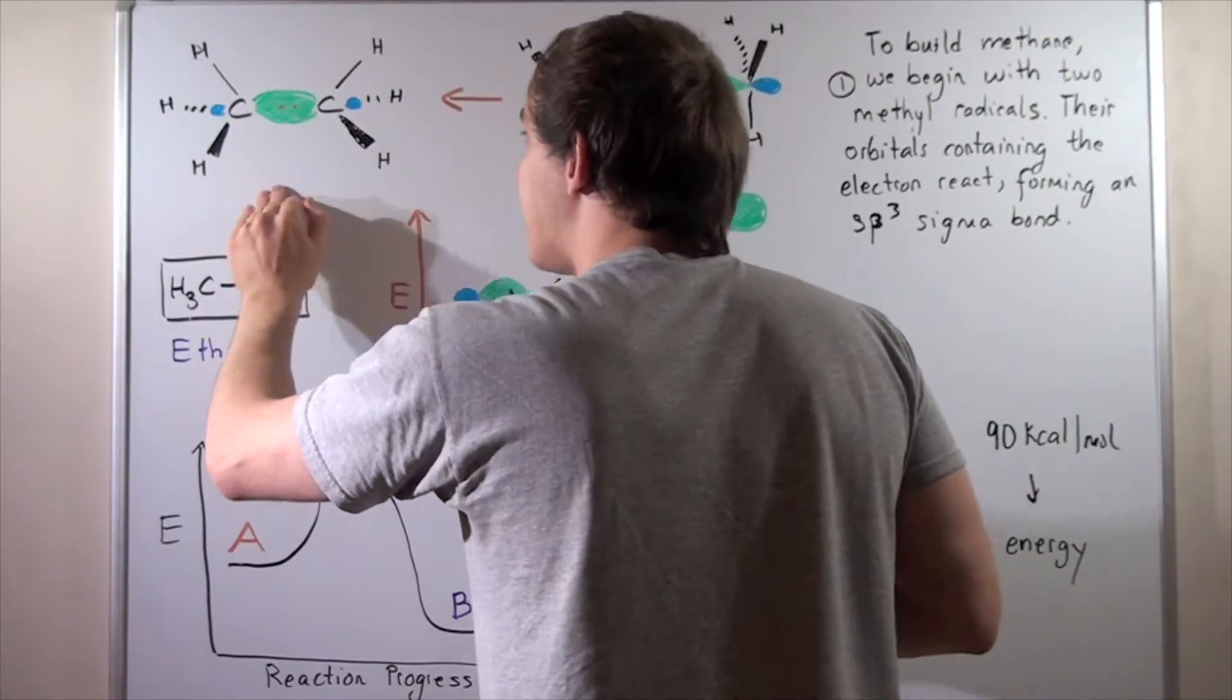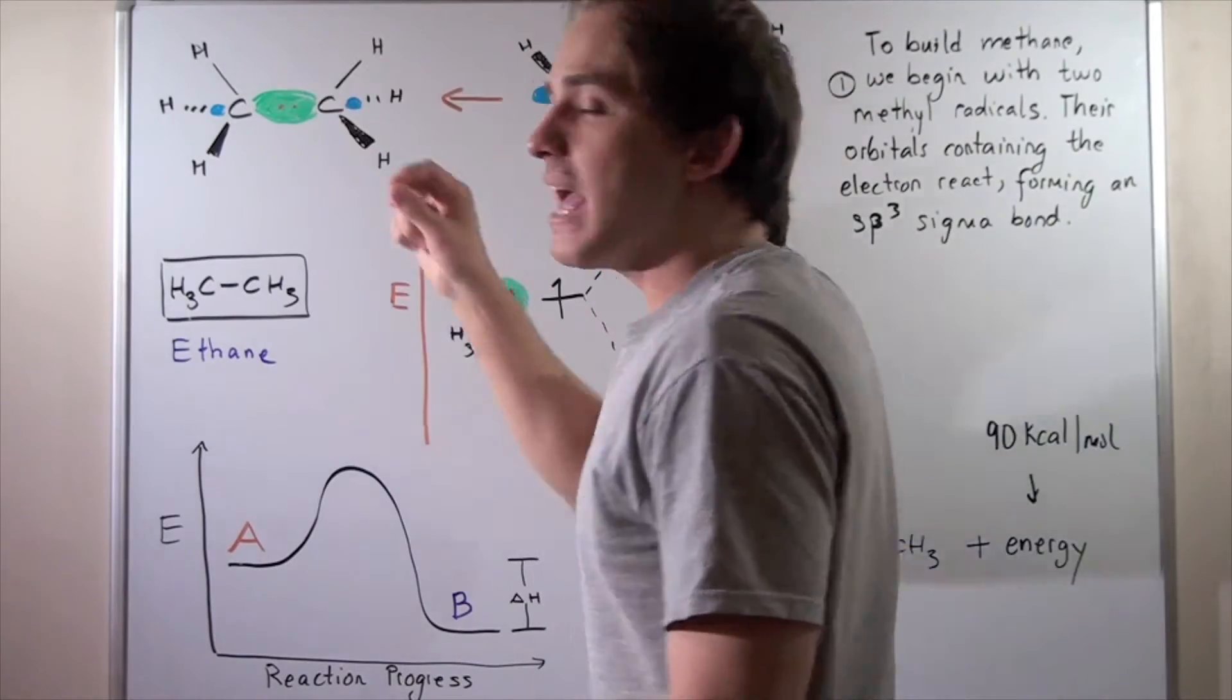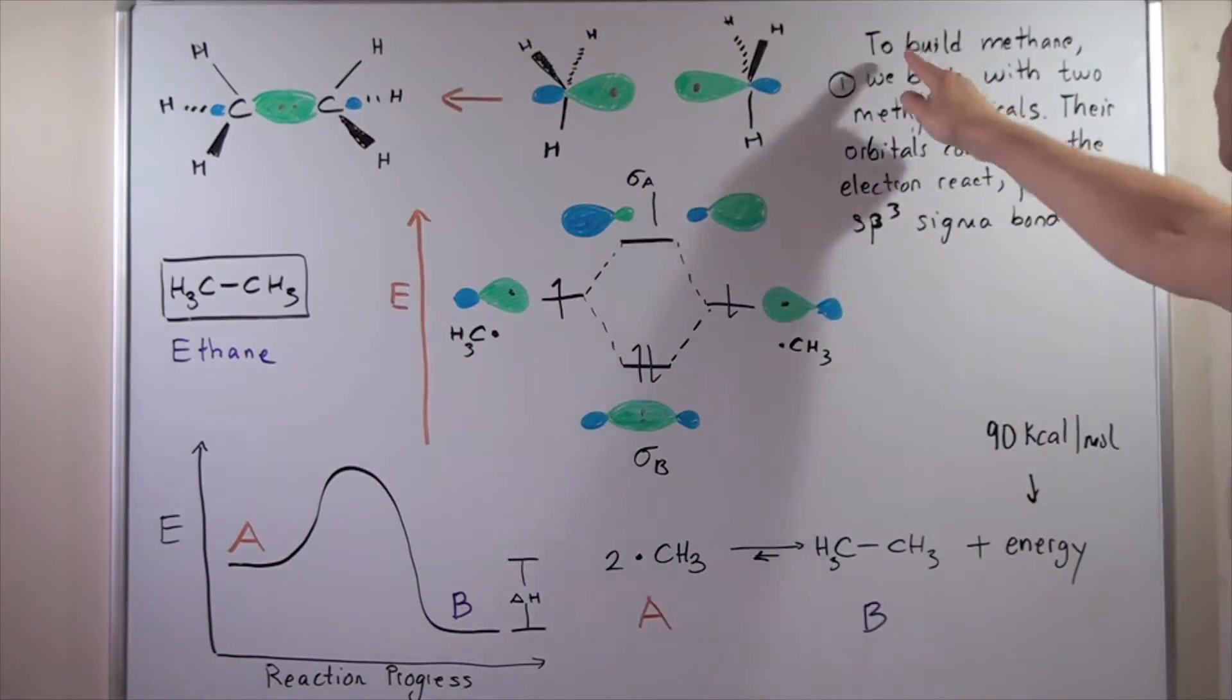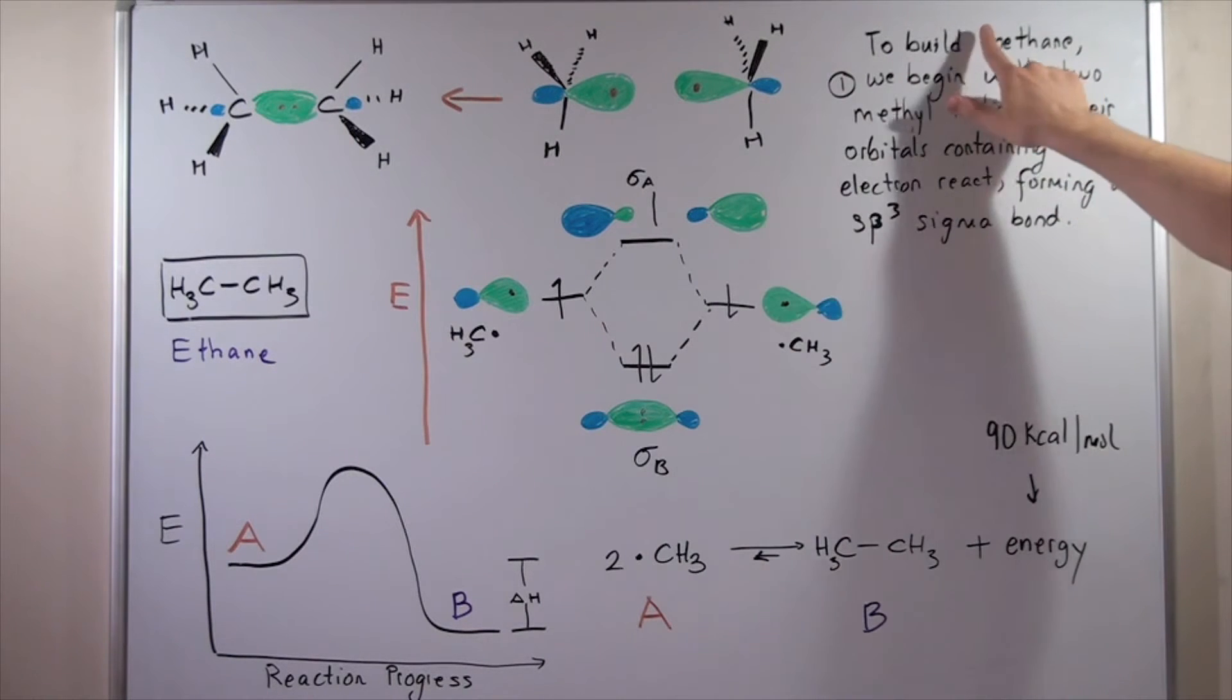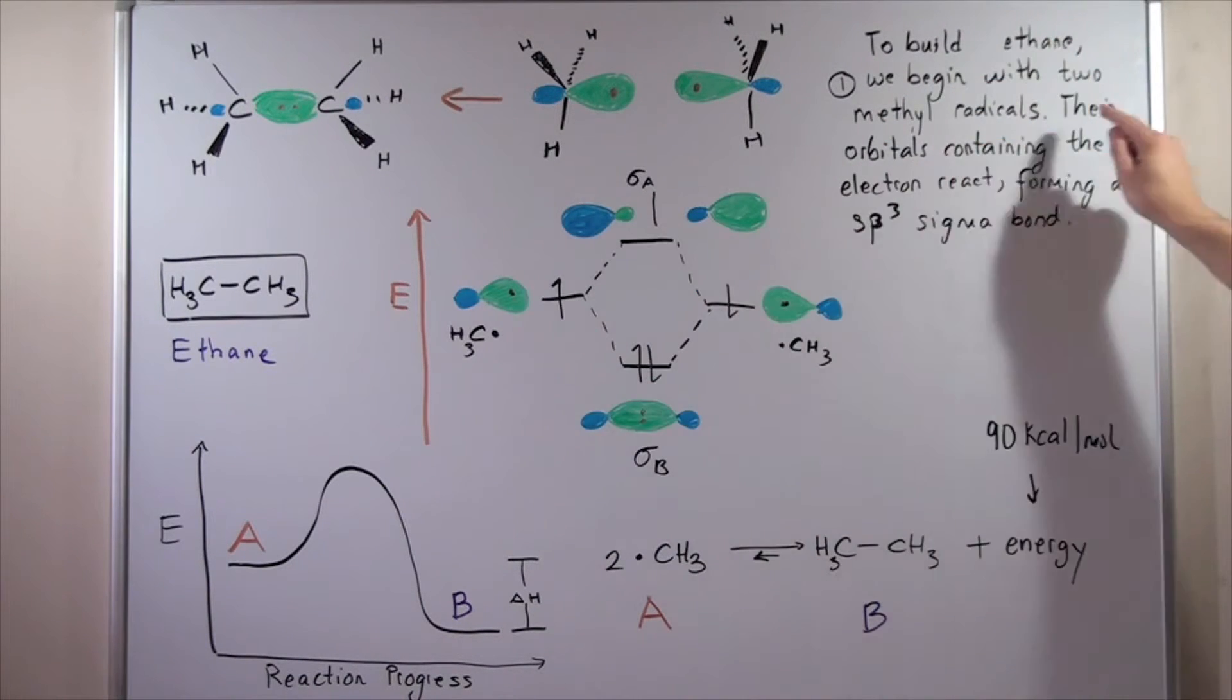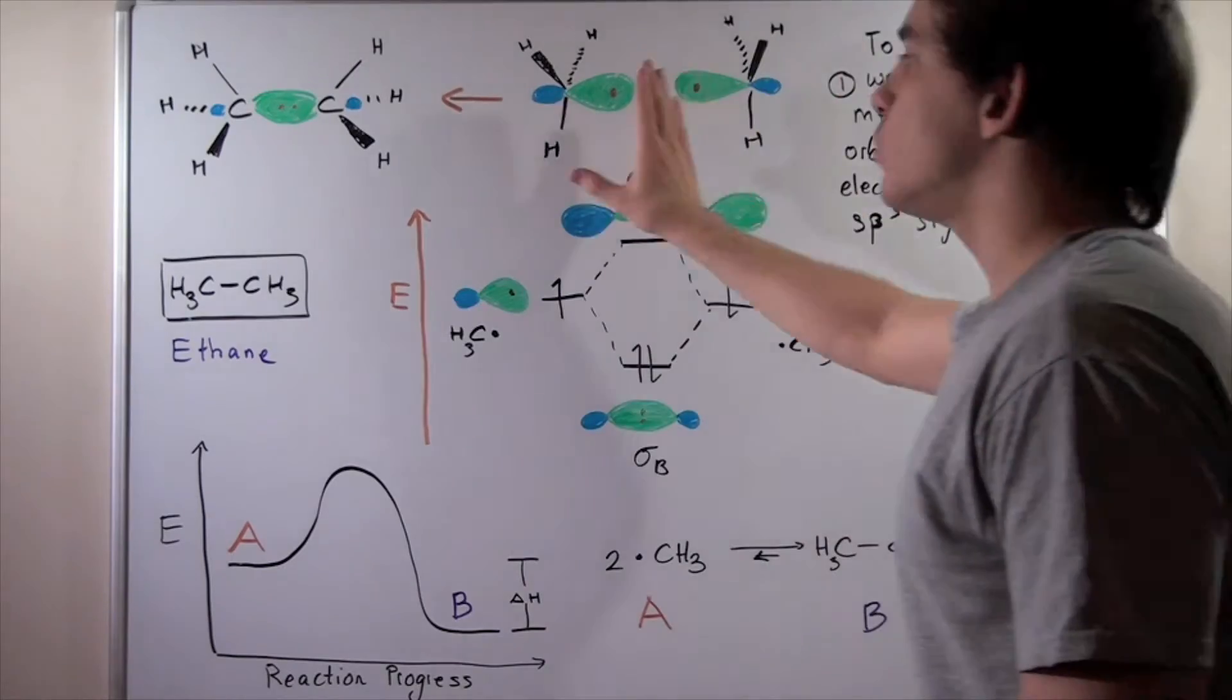And we get our ethane molecule in which every single bond is sp3 hybridized. Once again, to build methane, I'm sorry, to build, this should be ethane. To build ethane, we begin with two methyl radicals. Their orbitals containing the electrons react forming an sp3 sigma bond as we saw here.